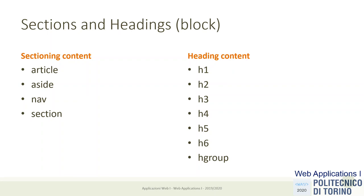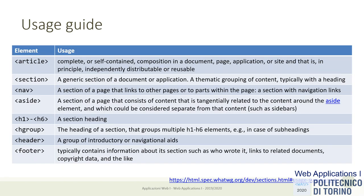The general structure of the page is made with sectioning elements. A page may have an article, a navigation section, a general section, and inside each section you can define titles — heading level one, heading level two, the heading of each section. All of these are block-level elements, so the layout is top to bottom. Here is an example from the specification showing how we are recommended to use these different elements.